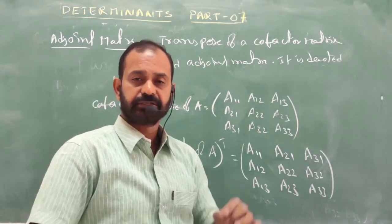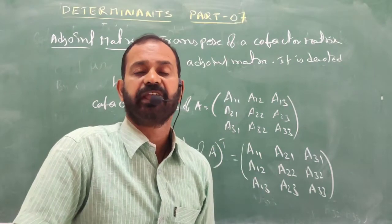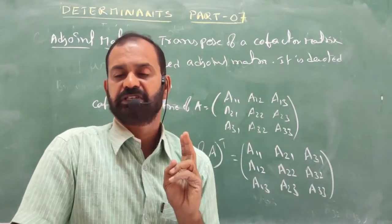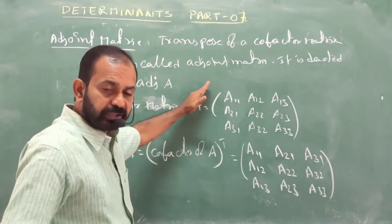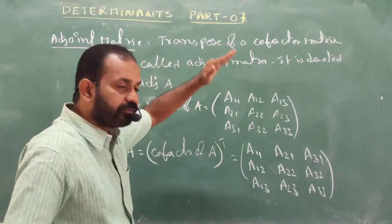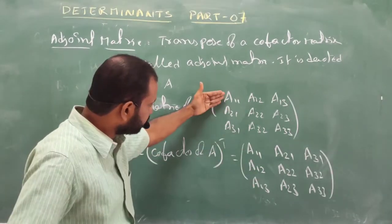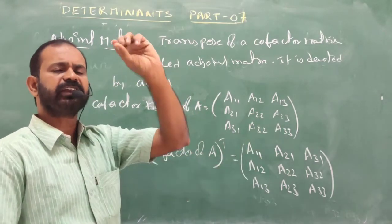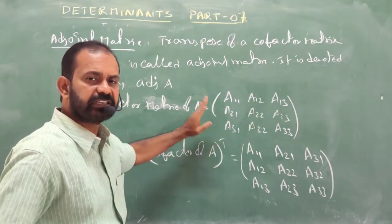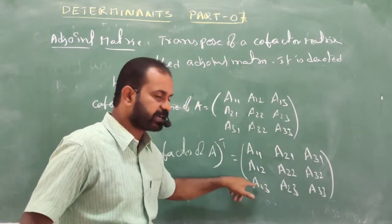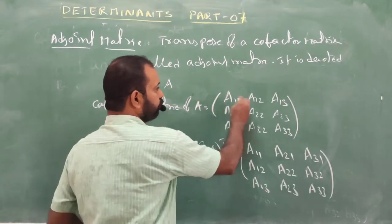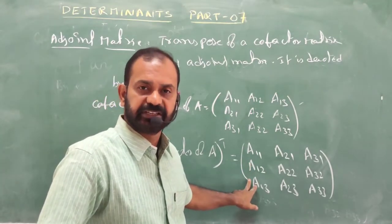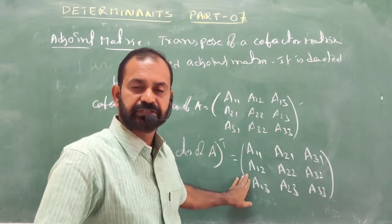When you are asked to find adjoint A, you have two procedures. One: find the cofactors, write the cofactor matrix, then write the adjoint matrix. Or, if you know the pattern, without writing the cofactor matrix, you can directly write the adjoint matrix.